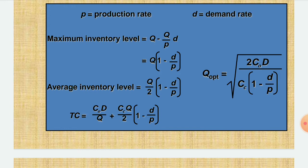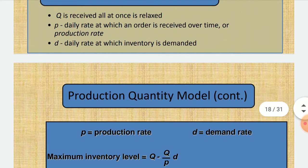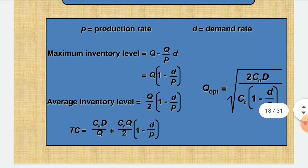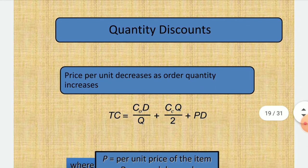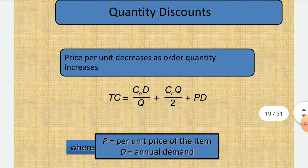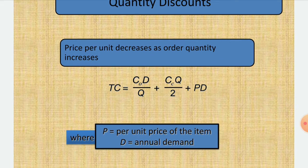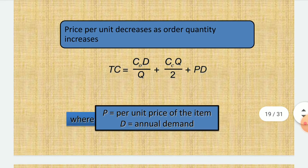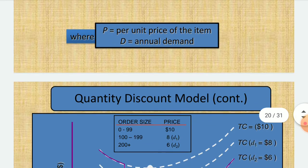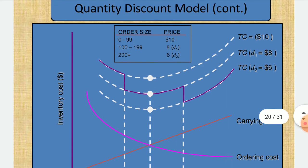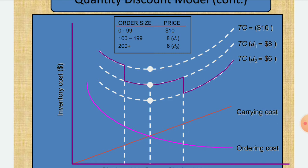The daily demand rate is an additional variable in this production model. For the quantity discount model, the price per unit decreases as order quantity increases. The total cost is C_O × D / Q + C_C × Q / 2 + P × D, where P is the per-unit price and D is the annual demand. This is similar to the EOQ model but varies with order size.